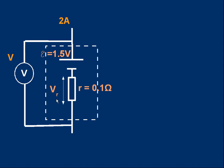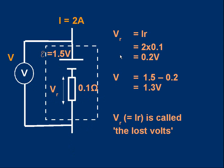Let's put some values in. Suppose the internal resistance is 0.1 ohms and the EMF is 1.5 volts. Suppose this is connected to some other components not shown and a current of 2 amps is flowing through the cell. Can we work out how big the voltage across the internal resistance is, and how big the terminal PD is? Yes, we can. The voltage across the internal resistance is easy: V equals IR, so it's the current through it times its resistance, small r. 2 amps times 0.1 ohms is 0.2 volts — that's the voltage across the internal resistance.